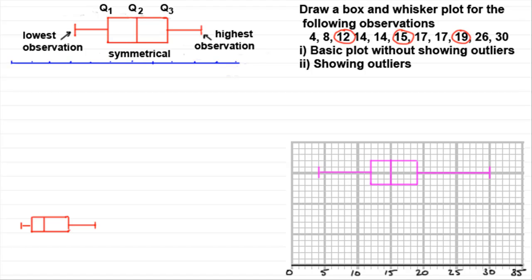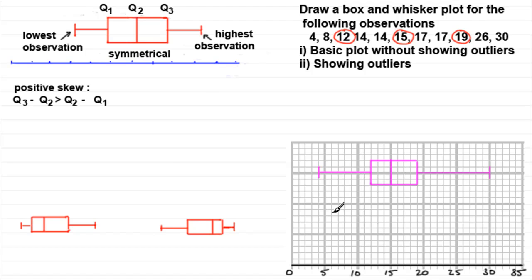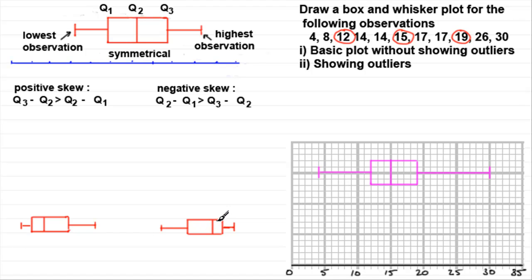When you draw your box plots, one side might seem more spread out than the other, or you might get the opposite effect. We have two types of skewness. The first is positive skew — this is when Q3 minus Q2 is greater than Q2 minus Q1. And similarly, negative skew is when Q2 minus Q1 is greater than Q3 minus Q2.